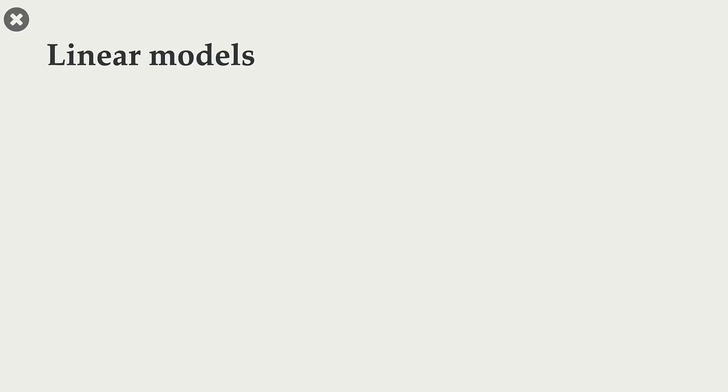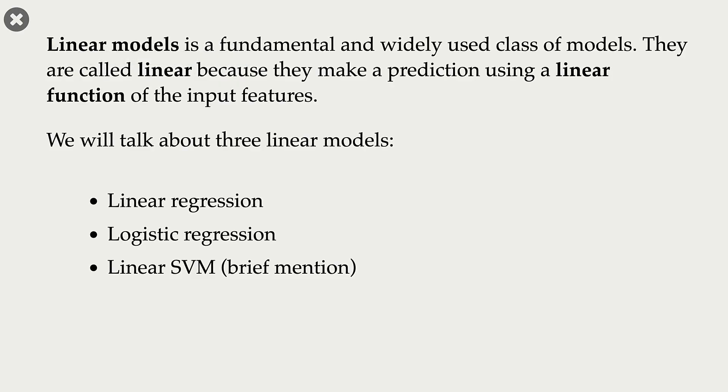So far, we have seen different kinds of machine learning models. We have seen decision trees, for example. We have also seen analogy-based models such as k-nearest neighbors and support vector machines with RBF kernels. There is another fundamental and widely used class of models called linear models.